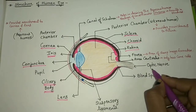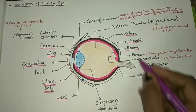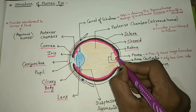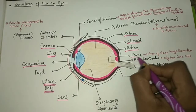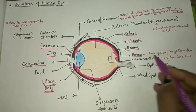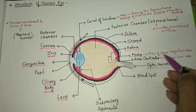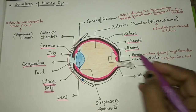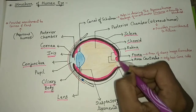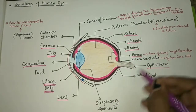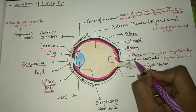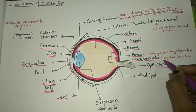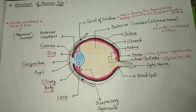The optic nerve exits from the back of the eyeball. The depression on the retina is called the fovea — it is the area where a sharp image is formed. The area around the fovea is called the area centralis, and it has only cone cells.